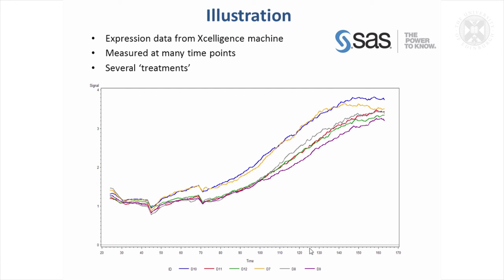I'm going to illustrate some SAS procedures using a data set. This data was recorded from a Celigent machine. There were samples of cells given six different treatments, and the machine measured a signal at many time points. Each of these colours represents a different treatment, and what's shown are the means for each treatment at each time point.